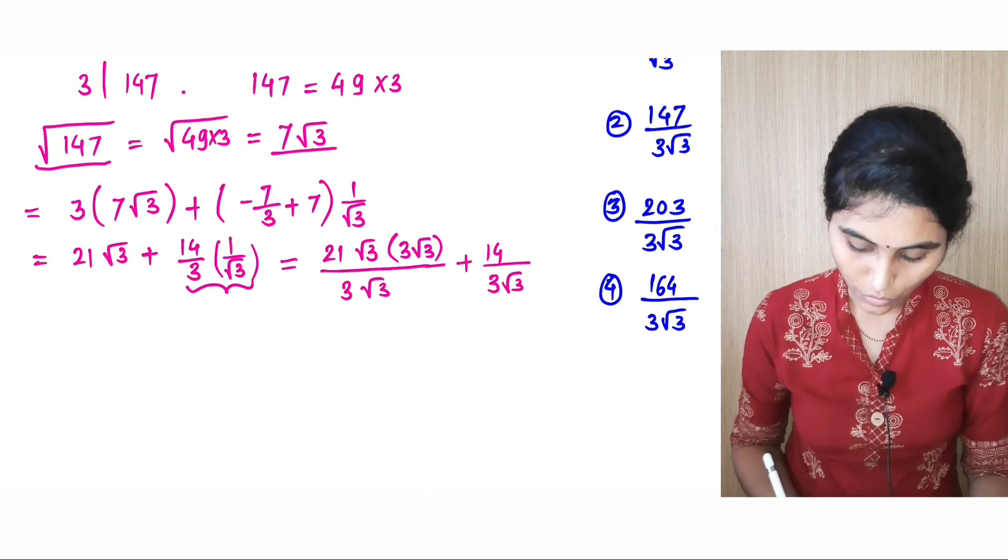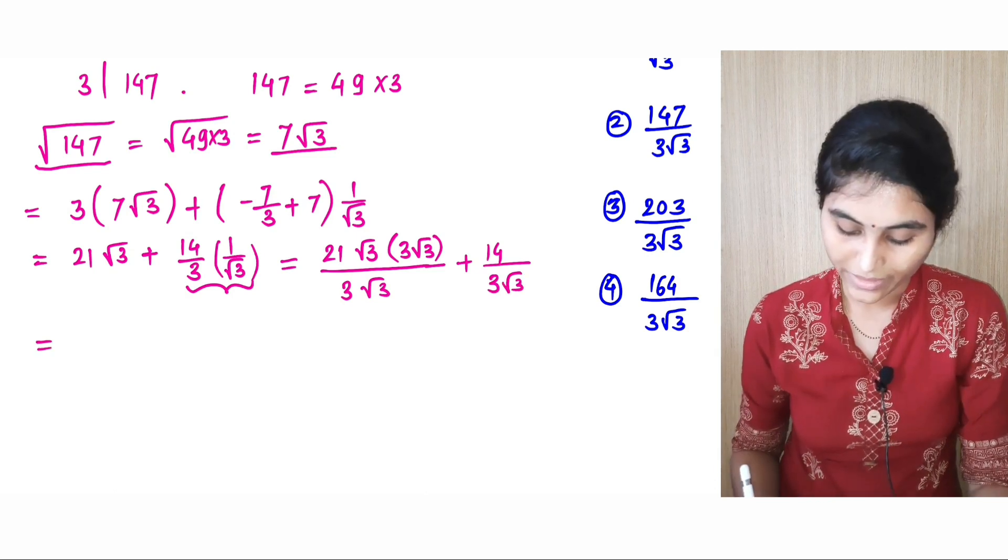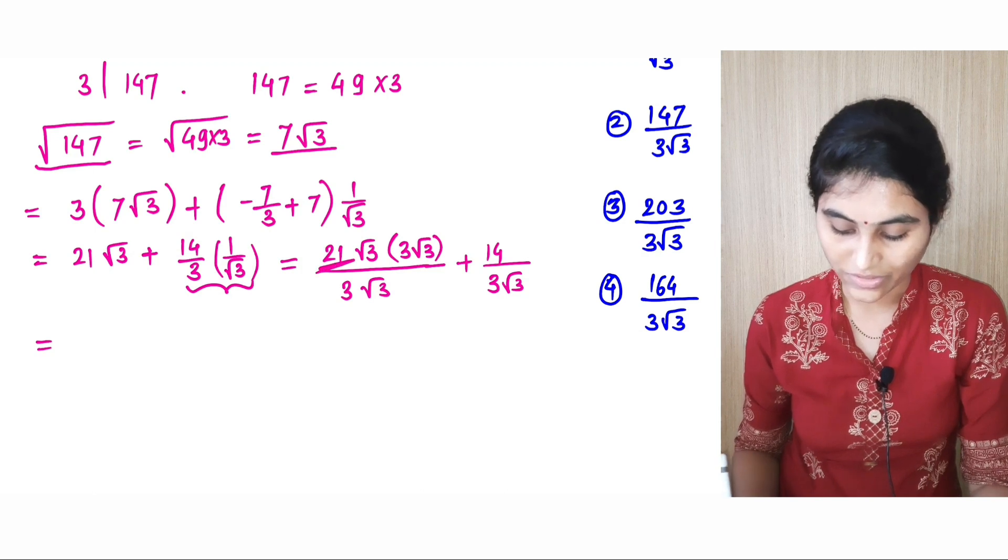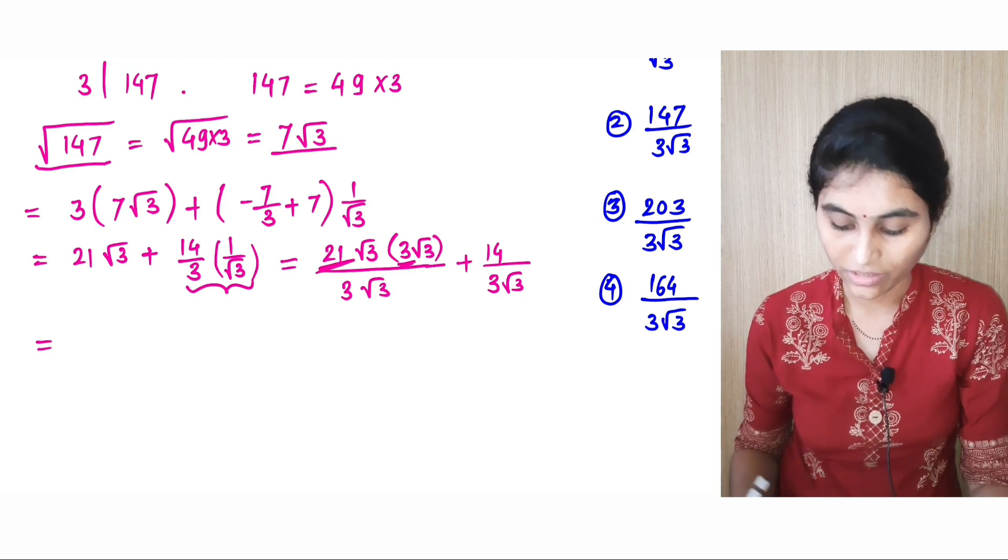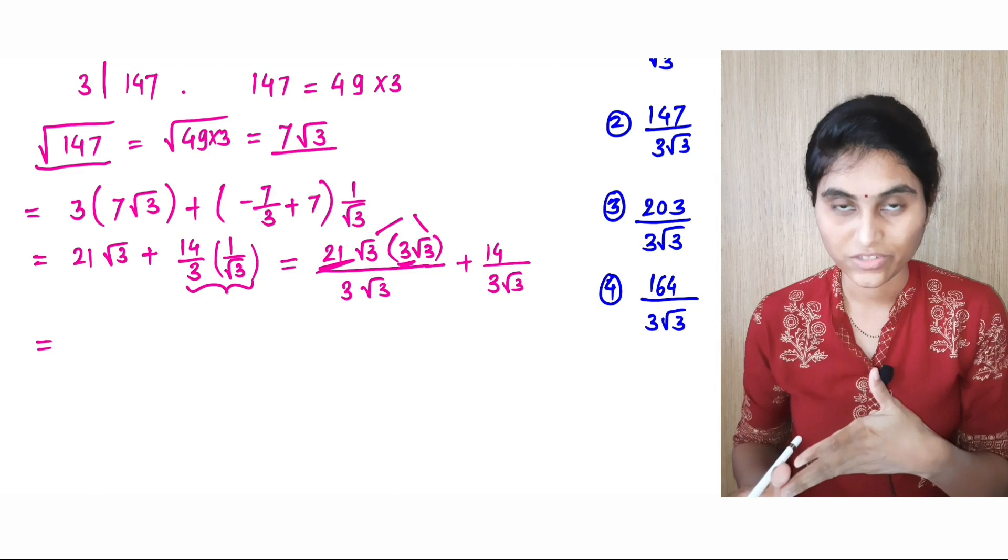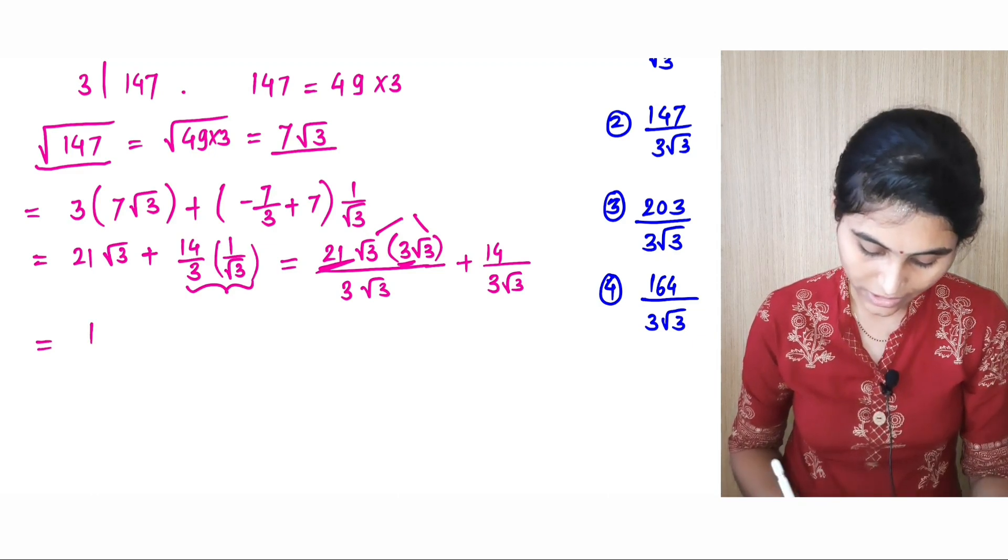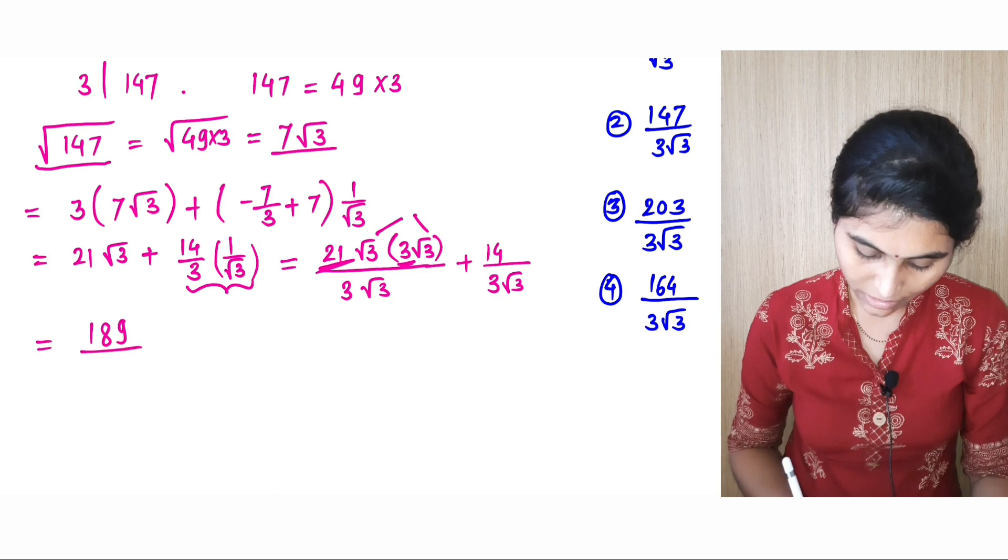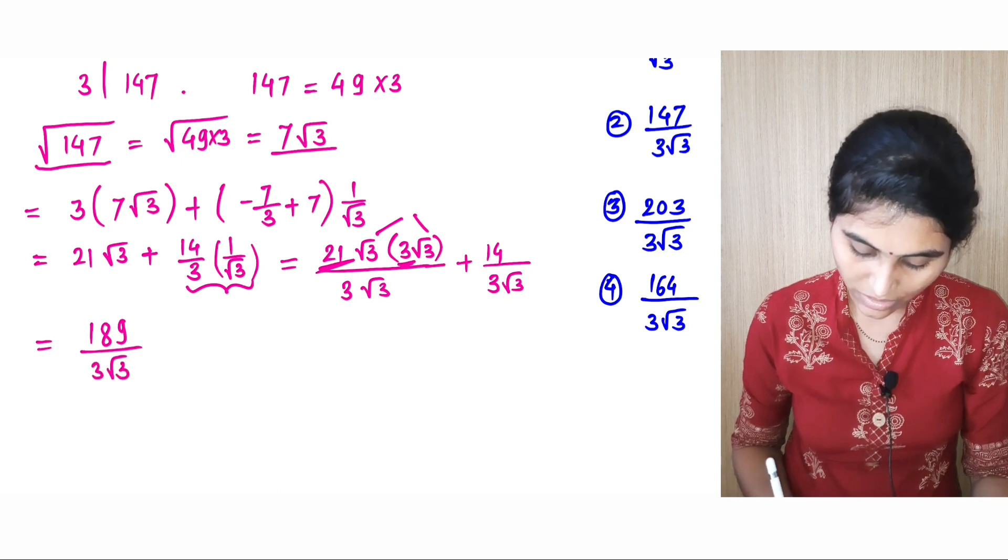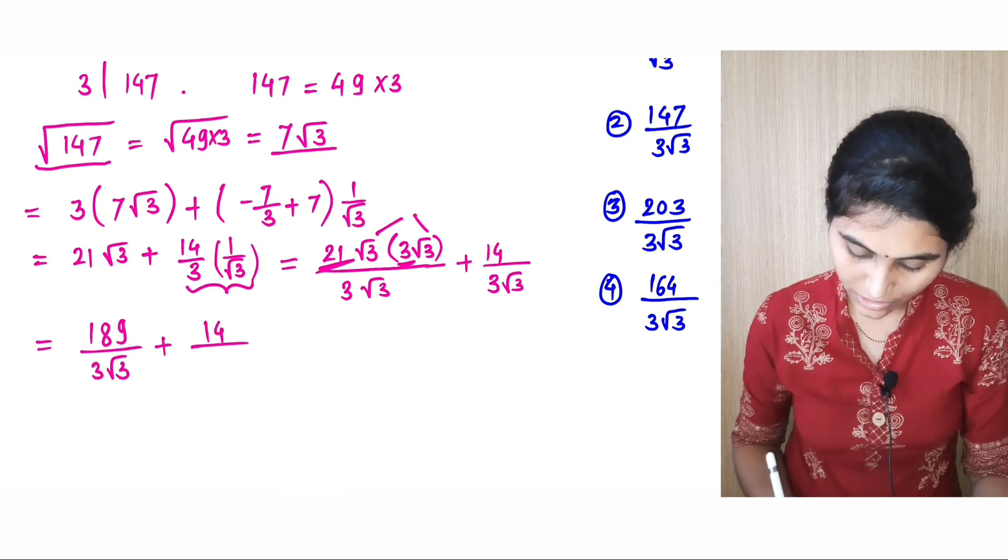Now this is equal to 21 times root 3 times 3 times root 3, which is 63 times 3. That is equal to 189 divided by 3 root 3, plus 14 by 3 root 3.